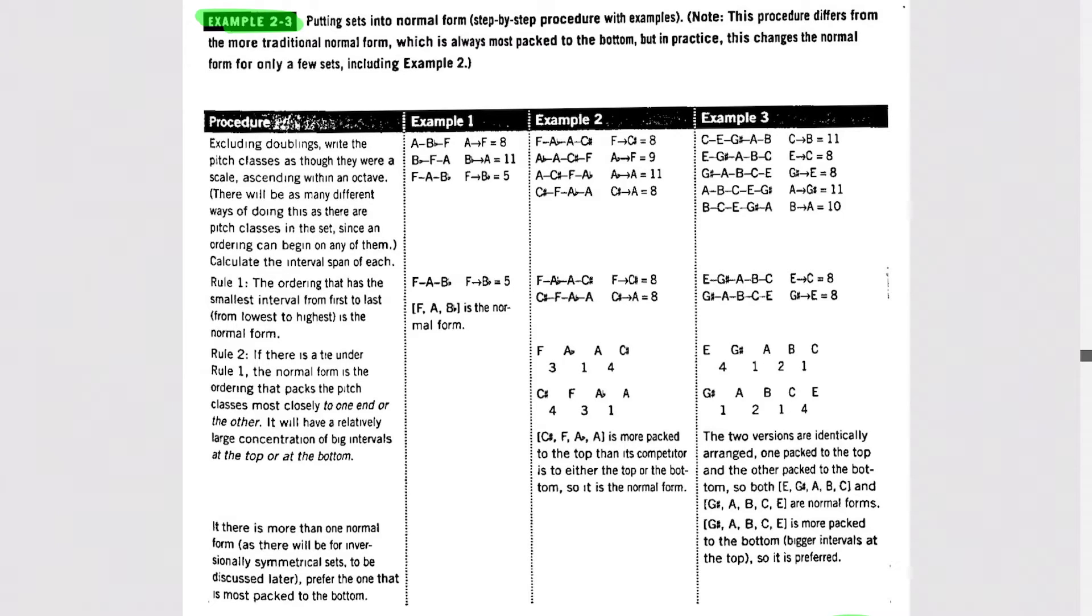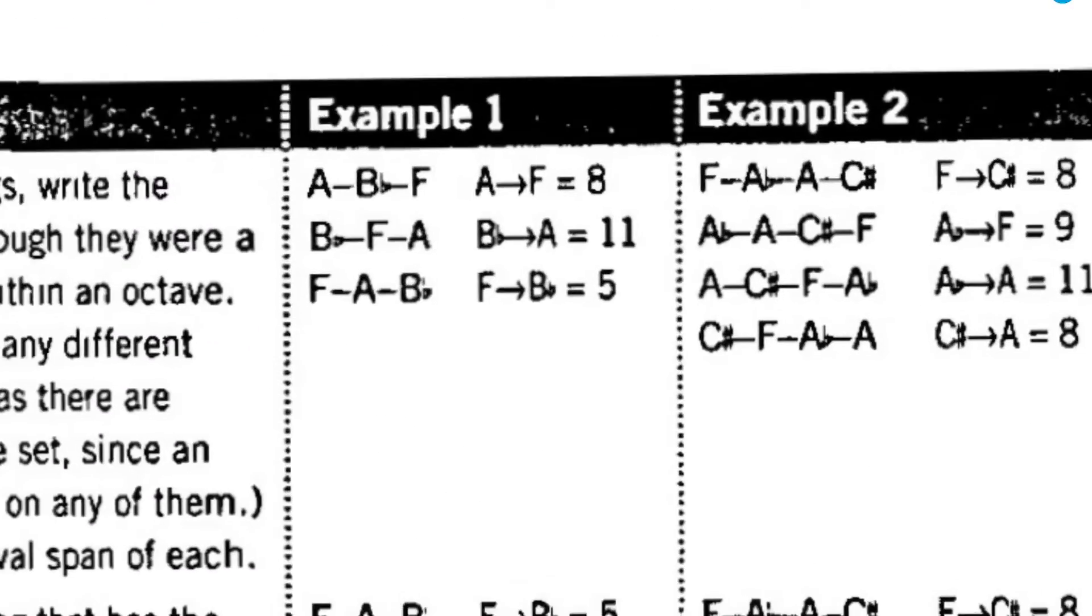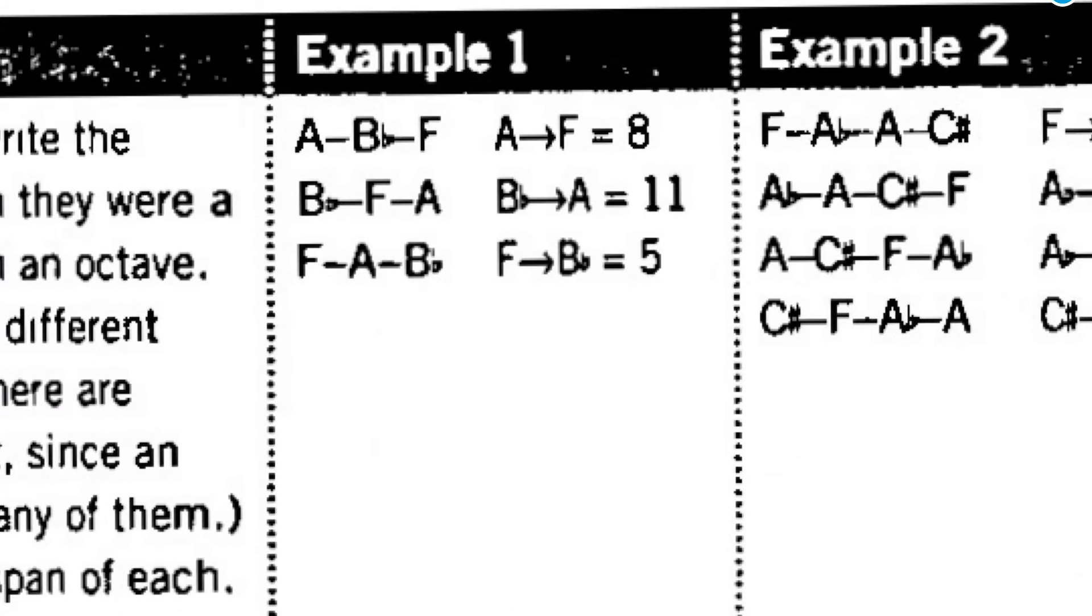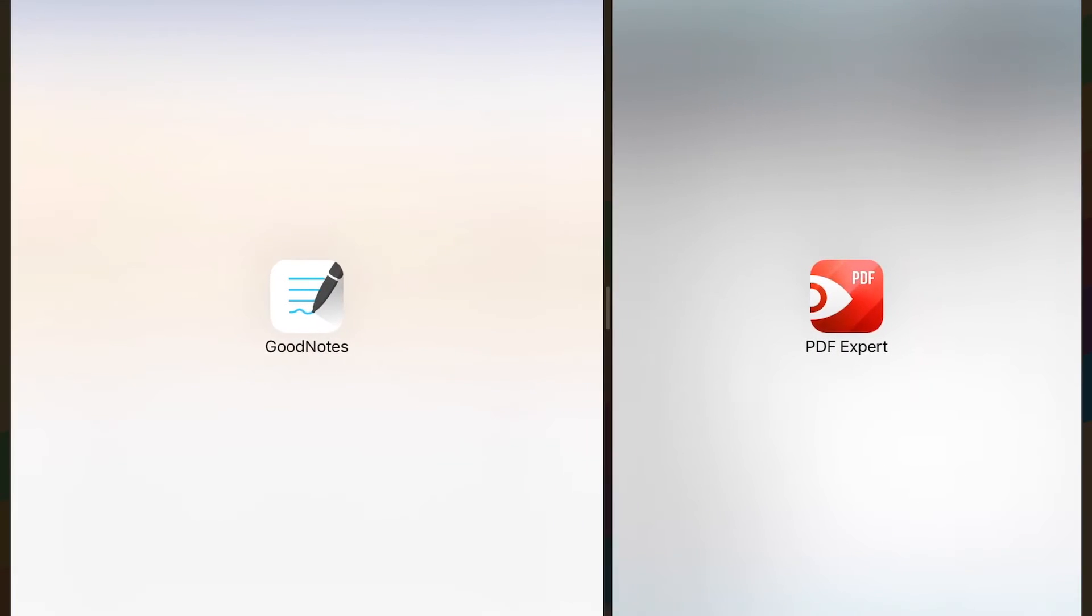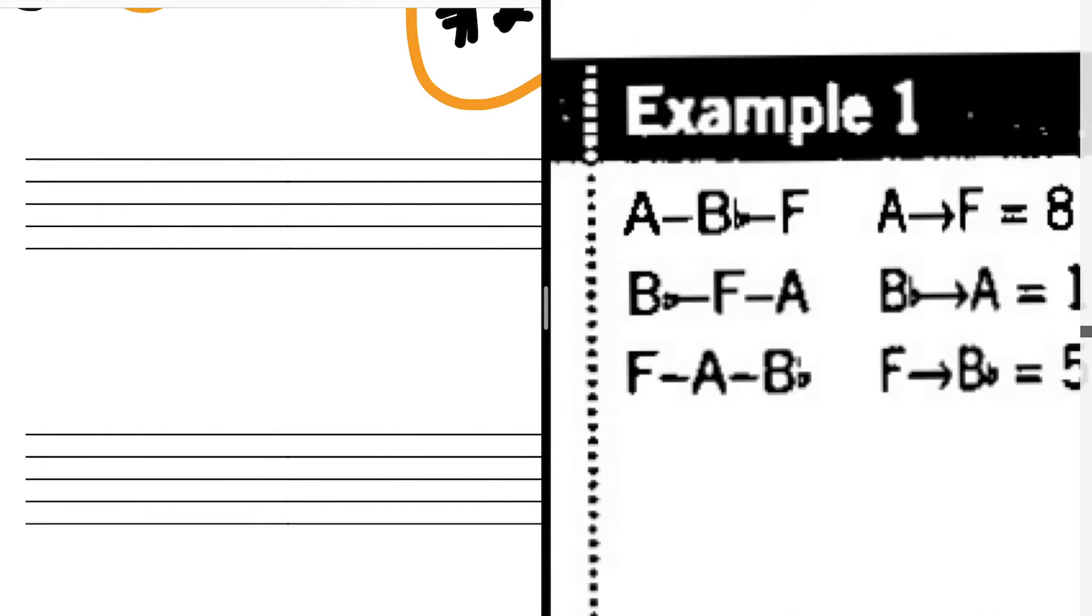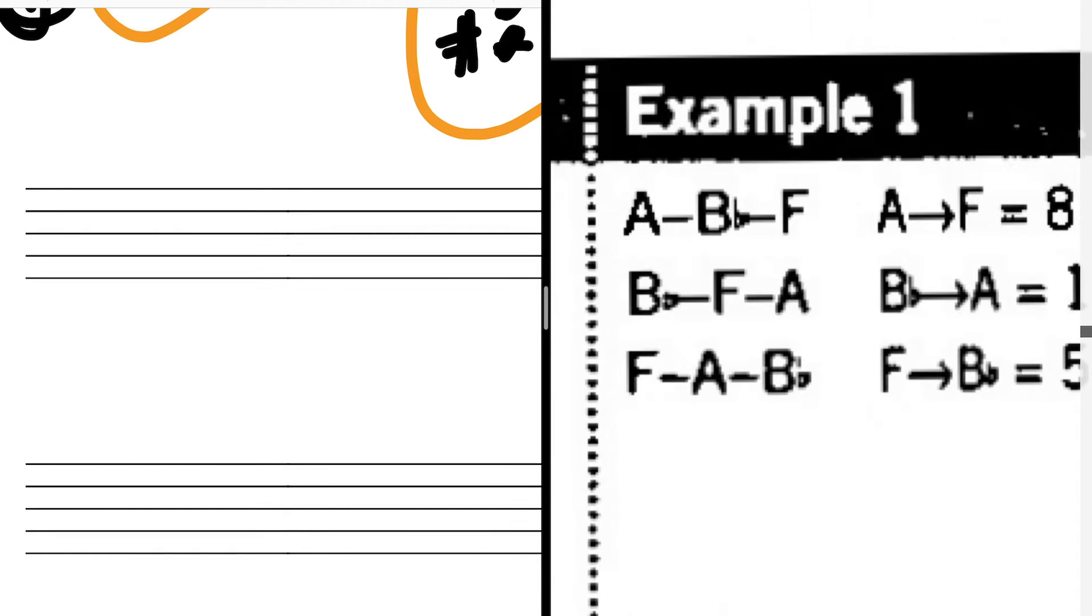Okay, the mathematical way of figuring this out is taking, let's look at example 1, taking a set like A, B flat, F. You need to consider if it's the most compact way of writing the set. And what I mean by that is the most compact way of writing it within an octave. So we're looking at A, B flat, F. So one way of writing these letters in ascending order is to just go from A through G, A, B flat, F.